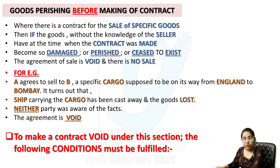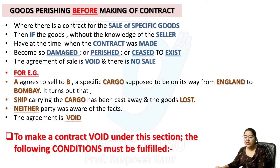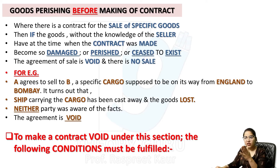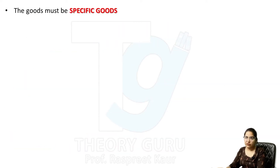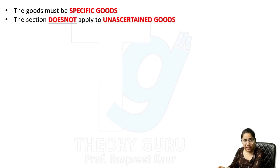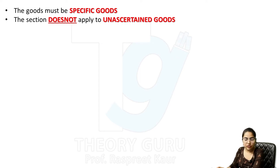To make a contract void under this section, the following conditions must be fulfilled. पहली condition: goods specific goods होनी चाहिए। यह section unascertained goods पर applicable नहीं होती — this section doesn't apply to unascertained goods. Unascertained goods के बारे में भी previous video देखें।